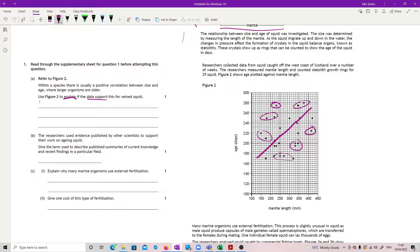So what I'm going to say is that, to start off with, I would say it doesn't support because, using veined squid information, some larger squid are younger and some smaller are older.